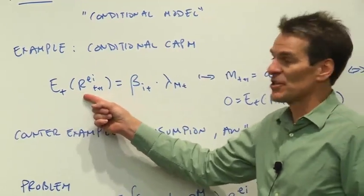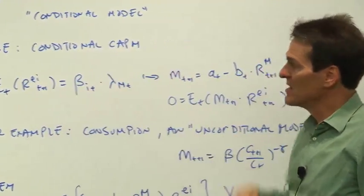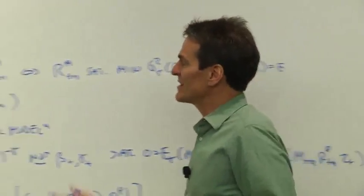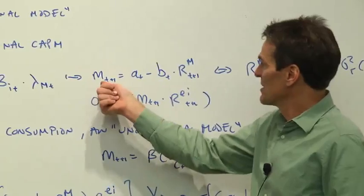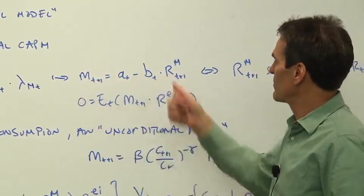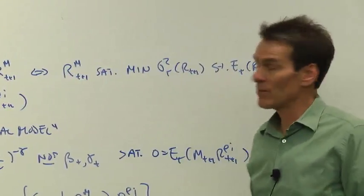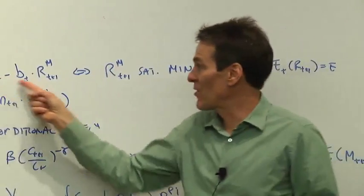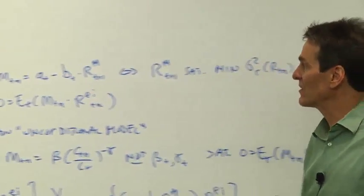We may say that expected returns depend on conditional betas times a conditional factor risk premium. Or, translated into discount factor language, there may be a discount factor which is a linear function of the market return. But that linear function may change over time. There are the parameters that vary over time of the discount factor.